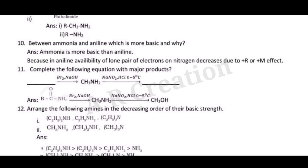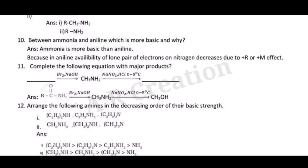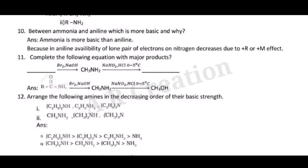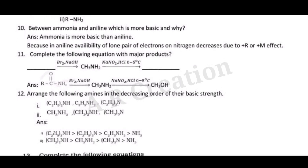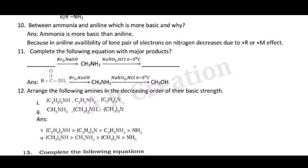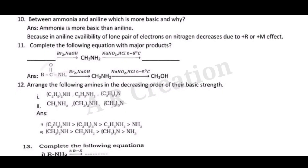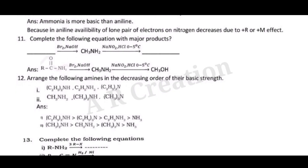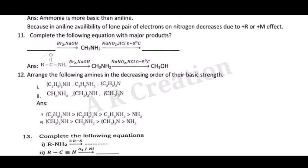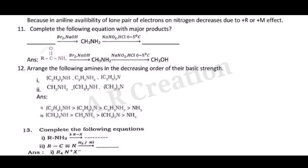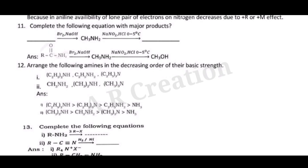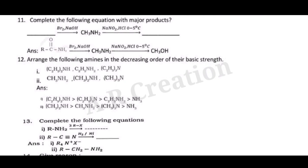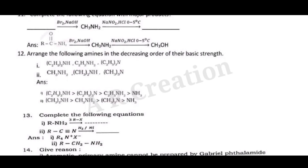Question 11: Complete the following equation with major products. Answer: ArNH₂ + NaNO₂ + HCl at 0–5°C → ArOH (via diazonium salt intermediate giving phenol with CH₃NH and NaNO₂/HCl at 0–5°C).